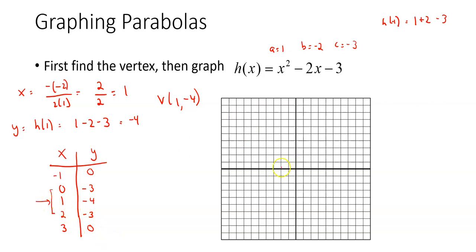So where are my points? Negative 1, 0 is right there on the axis. 0, negative 3 is down here. 1, negative 4. 2, negative 3, and 3, 0. Best I can, I draw a curve that connects them all. So there's my parabola.